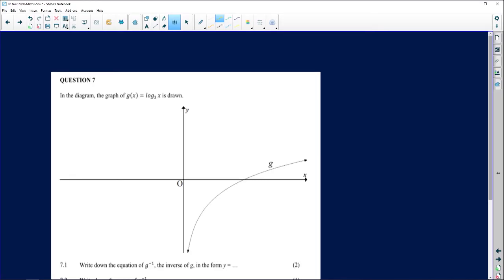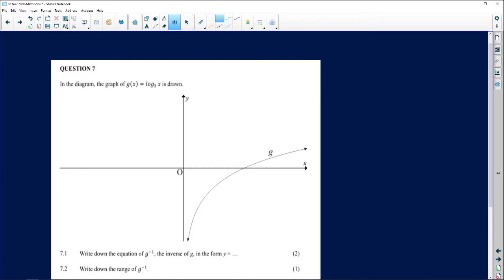This is question 7. It says in a diagram, the graph of g(x) equals log base 3 of x is drawn. Very beautiful stuff that we're looking at there. We can see the graph of g, it's an awesome log graph. 7.1 says write down the equation of the inverse of g in the form y equals.